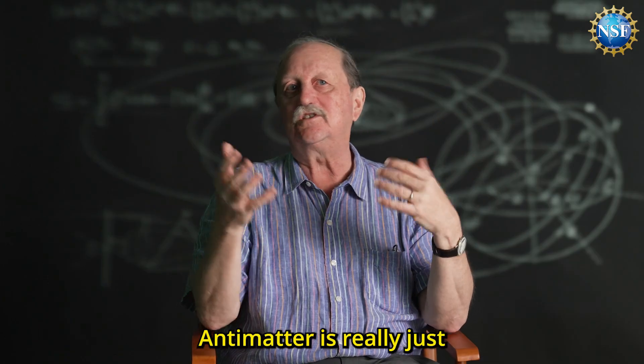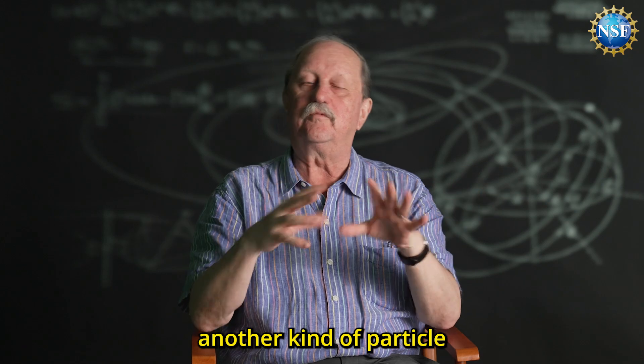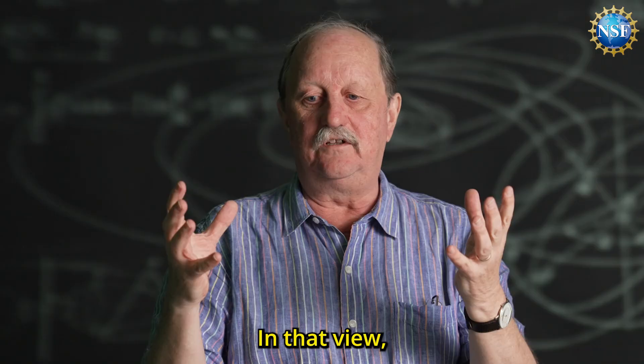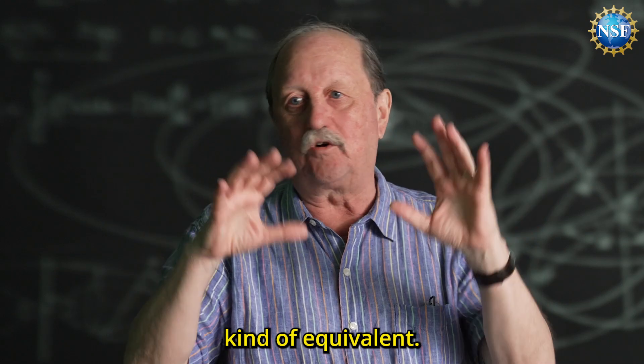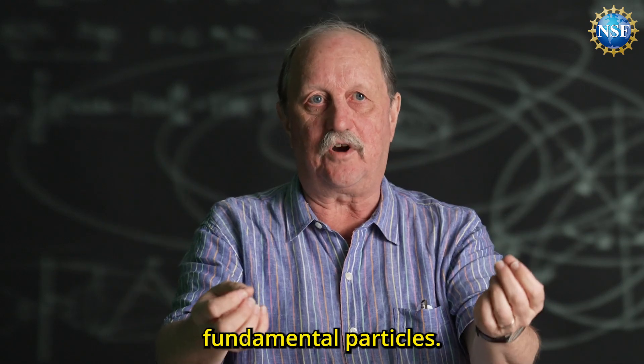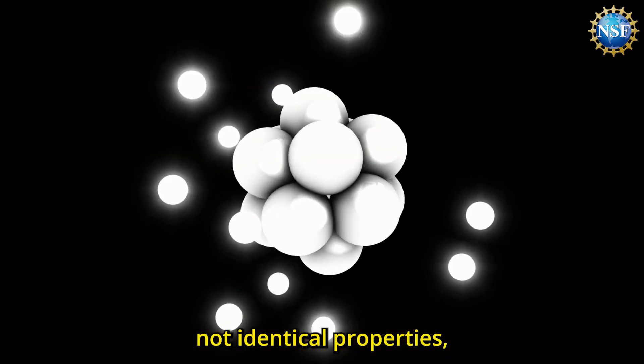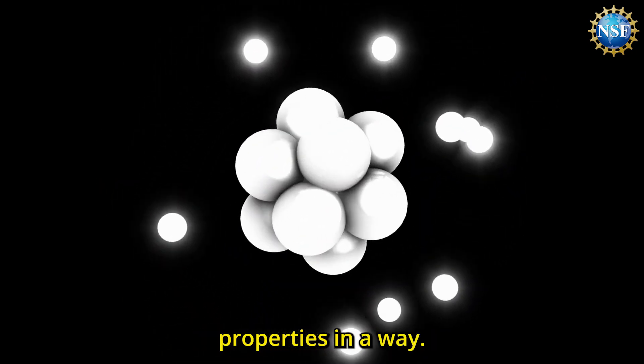Antimatter is really just another kind of particle that's there all the time in that simple picture. In that view, these things are all kind of equivalent - they're all fundamental particles, produced equally. They have not identical properties, but they have these sort of mirror properties in a way.